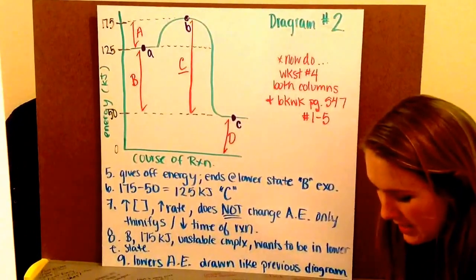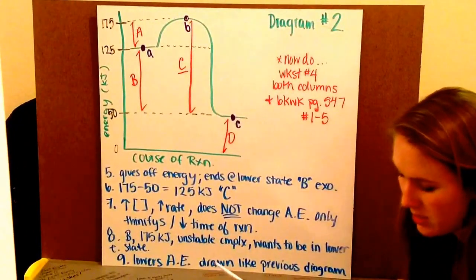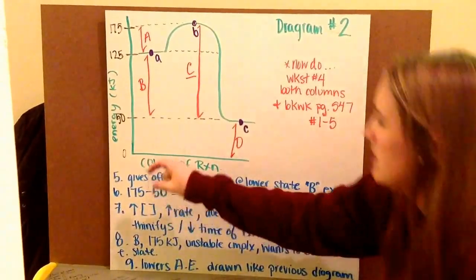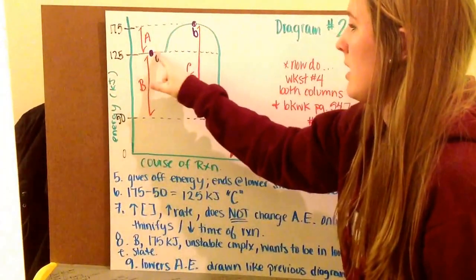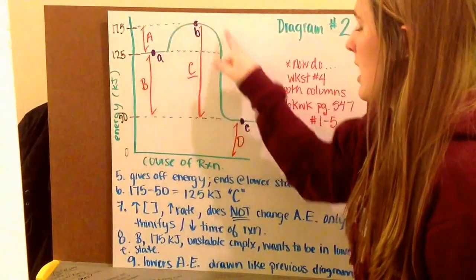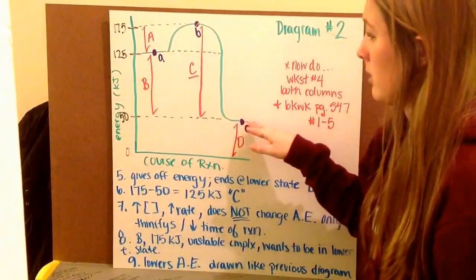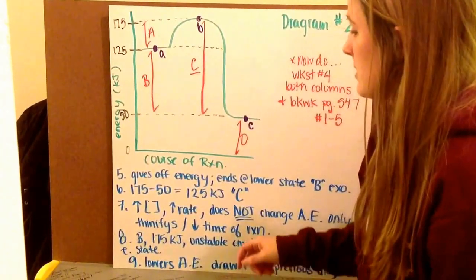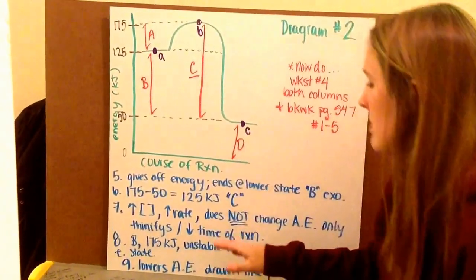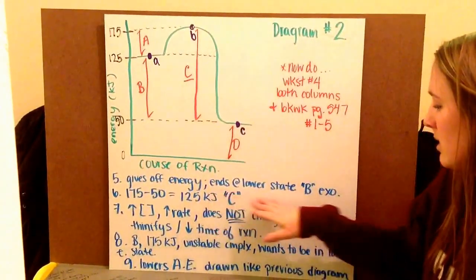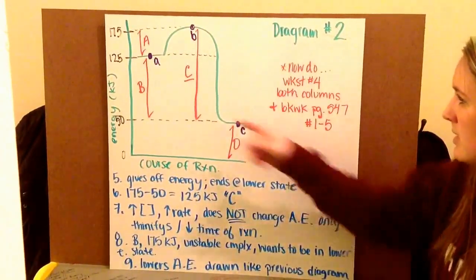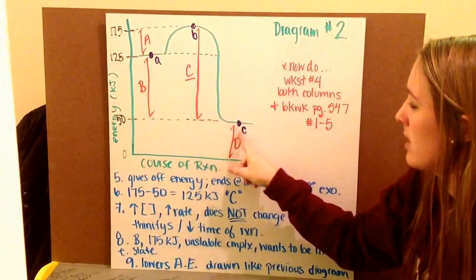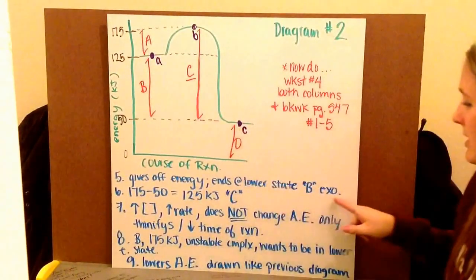Number five asks, indicate if this reaction is exo or endothermic, and get the letter corresponding. Well, it gives off energy. We know that because my reactants start here, after it goes down, my products end at a lower energy, so that energy had to go somewhere. So therefore, it escapes. It leaves the system, goes into the environment. And so, since it ends at a lower state, it is B, the difference between my reactants, which is A, and my products, which is C. And therefore, it's exothermic.